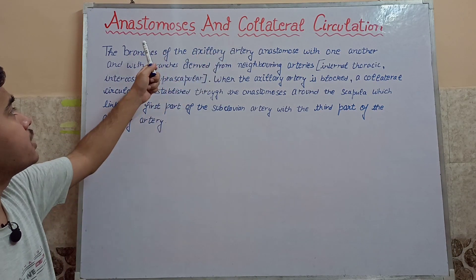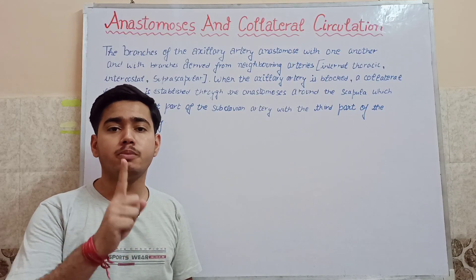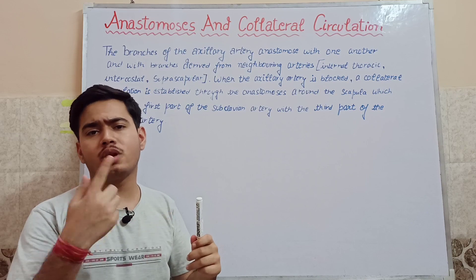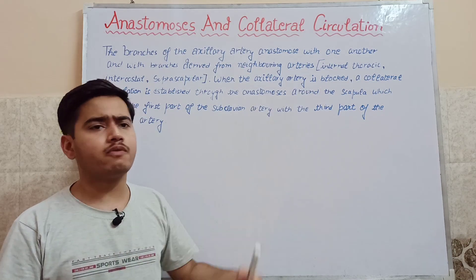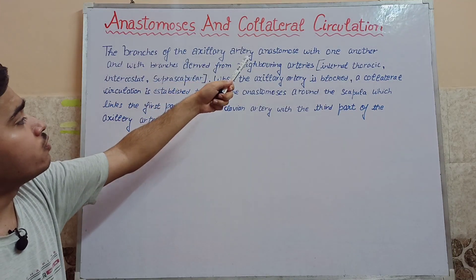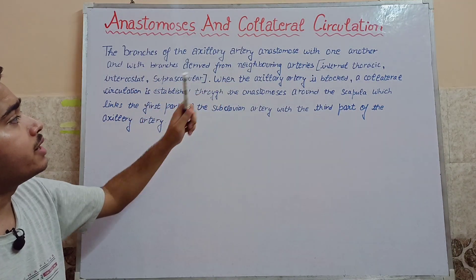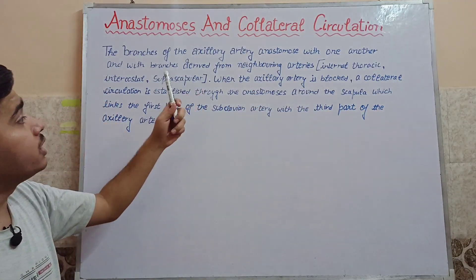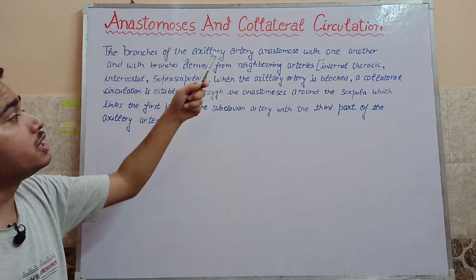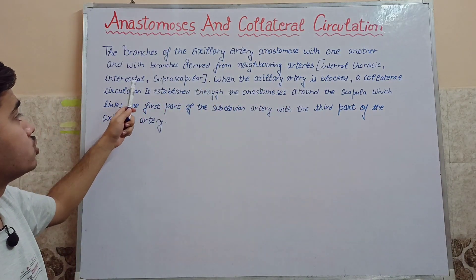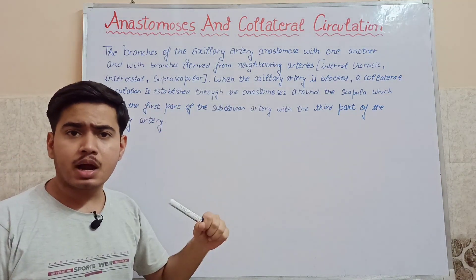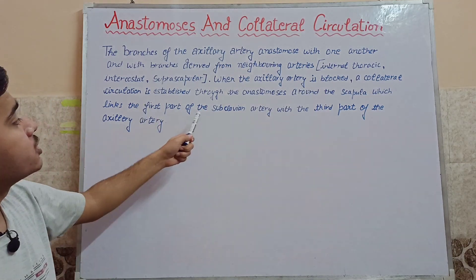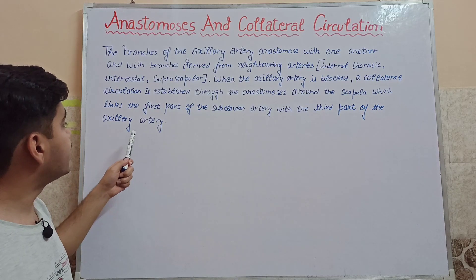Now let's talk about anastomosis and collateral circulation. The branches of the axillary artery anastomose with one another and also with branches derived from neighbouring arteries such as the internal thoracic, intercostal, and suprascapular arteries. When there is a blockage in the axillary artery, a collateral circulation is established through anastomosis around the scapula, which links the first part of the subclavian artery with the third part of the axillary artery.